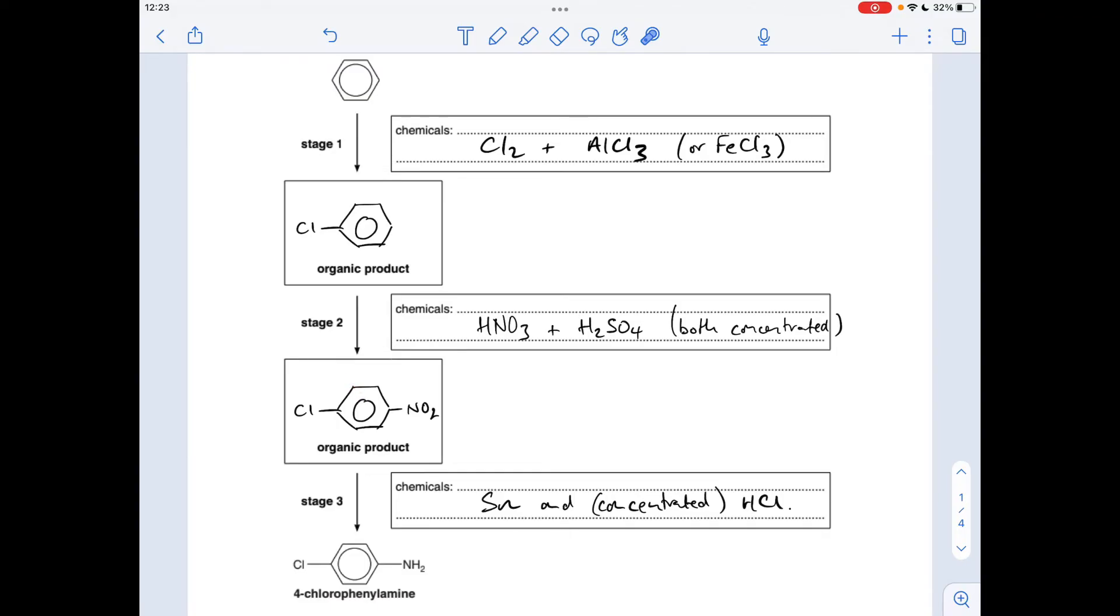How do you do that? You react this with a mixture of nitric acid and sulfuric acid, both concentrated. And that'll give you that. And then we need to reduce the nitro group to the amino group using a mixture of tin and concentrated HCl.